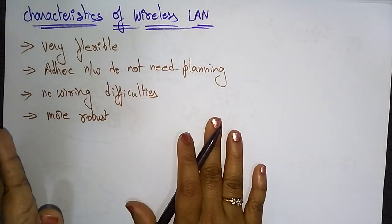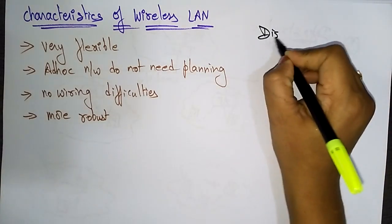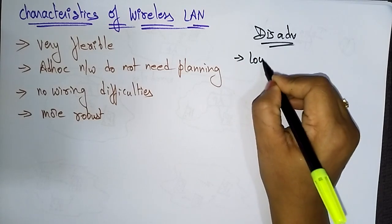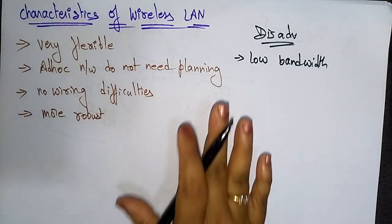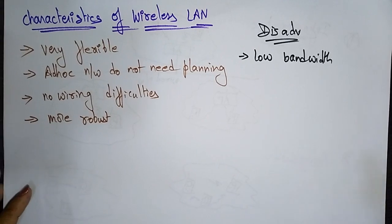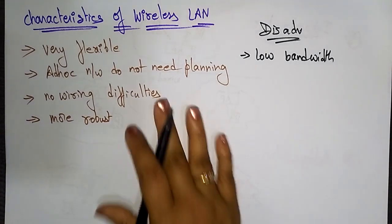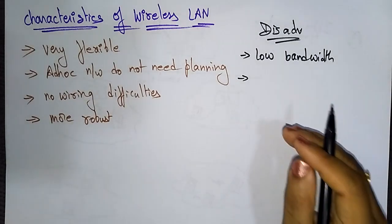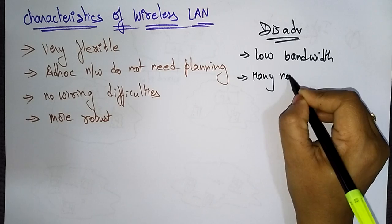Now let's look at the disadvantages of wireless local area networks. The main disadvantage is low bandwidth — when compared to a wired local area network, the wireless network has lower bandwidth. Additionally, many national restrictions for wireless exist.